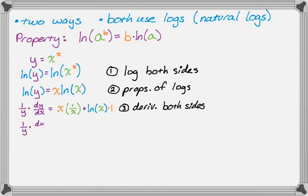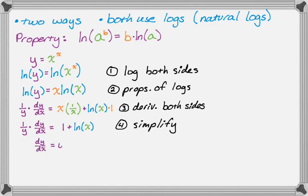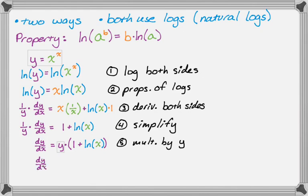Now I'm just going to simplify a little bit. 1 over y times dy/dx equals 1 plus the natural log of x. Now I want to solve for dy/dx, so I'm going to multiply both sides by y. That gives me dy/dx equals y times the quantity 1 plus the natural log of x. I have a y in my answer, but going back to the original problem, we know y equals x to the x, so we substitute: dy/dx equals x to the x times the quantity 1 plus the natural log of x. And we're done.